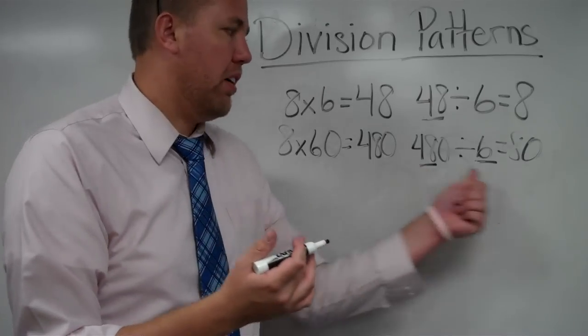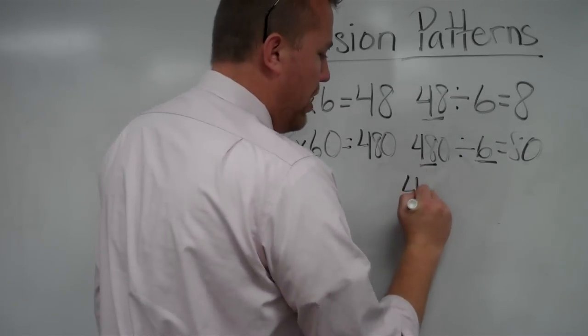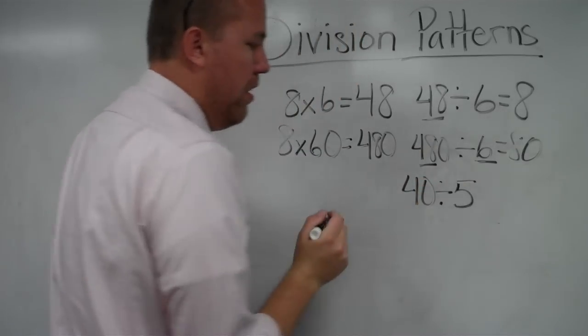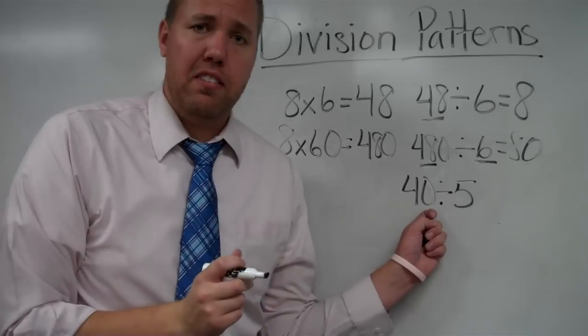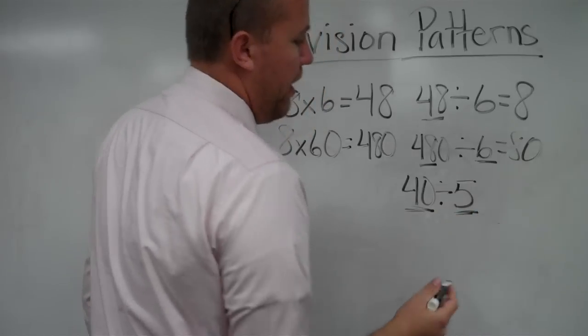So what we're looking for is the basic fact. Some of these we might run across as, say, 40 divided by 5. Now, that already ends in a 0, but we look at the basic fact, 40 divided by 5.